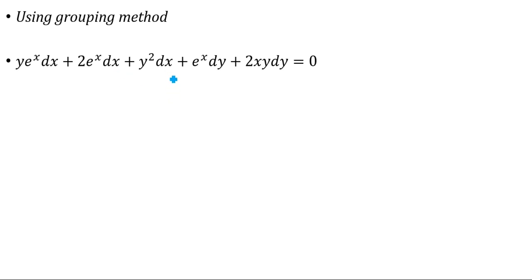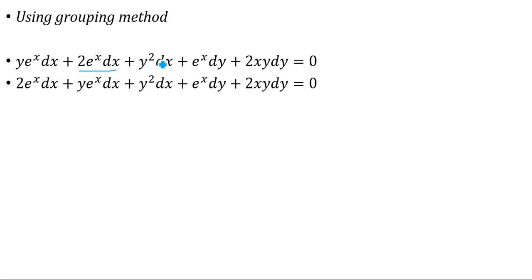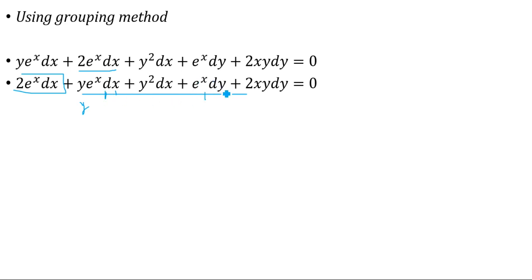Using the grouping method, we open the brackets and write dx with all variables. We separate x-only terms, y-only terms, and mixed terms. The only x-only term is 2e^x, which is placed separately since its integral is 2e^x. For ye^x dx + e^x dy, differentiating e^x with respect to x keeps y common, and differentiating ye^x with respect to y gives e^x, so these two terms go together, forming d(ye^x). For y²dx + 2xy dy, the function is xy² since differentiating gives y² in x and 2xy in y. So we have d(2e^x) + d(ye^x) + d(xy²).